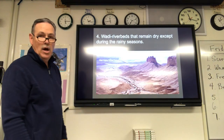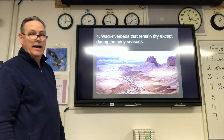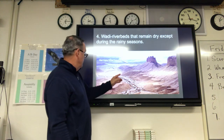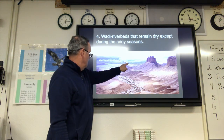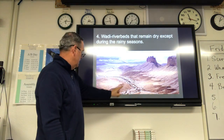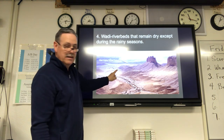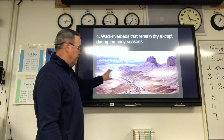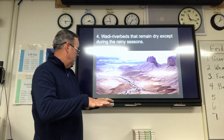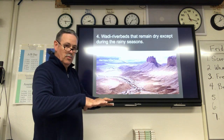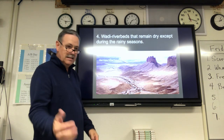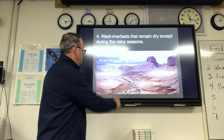A wadi is a riverbed that remains dry except during the rainy season. You can see this wadi here — there's a dry riverbed. That's what a wadi is: it remains dry until the rainy season, and then of course has water in it.